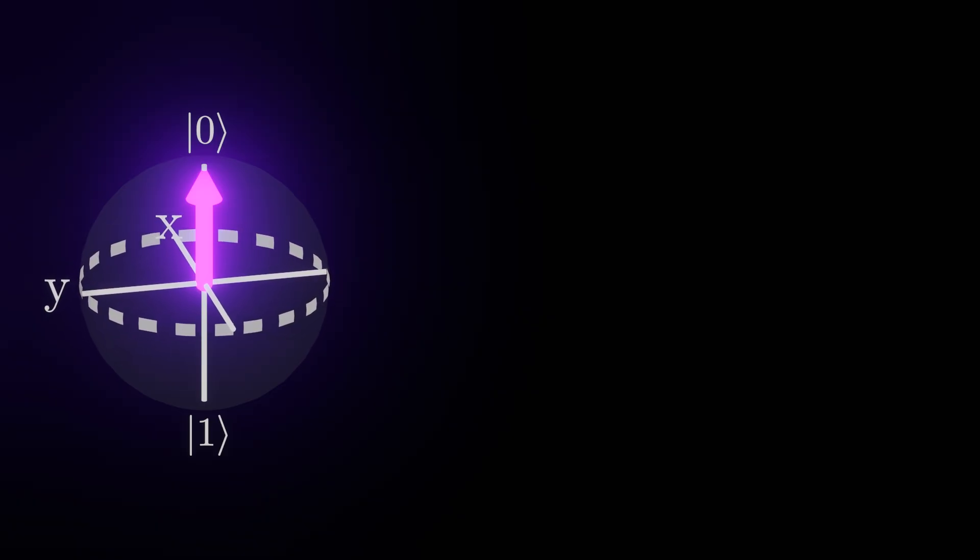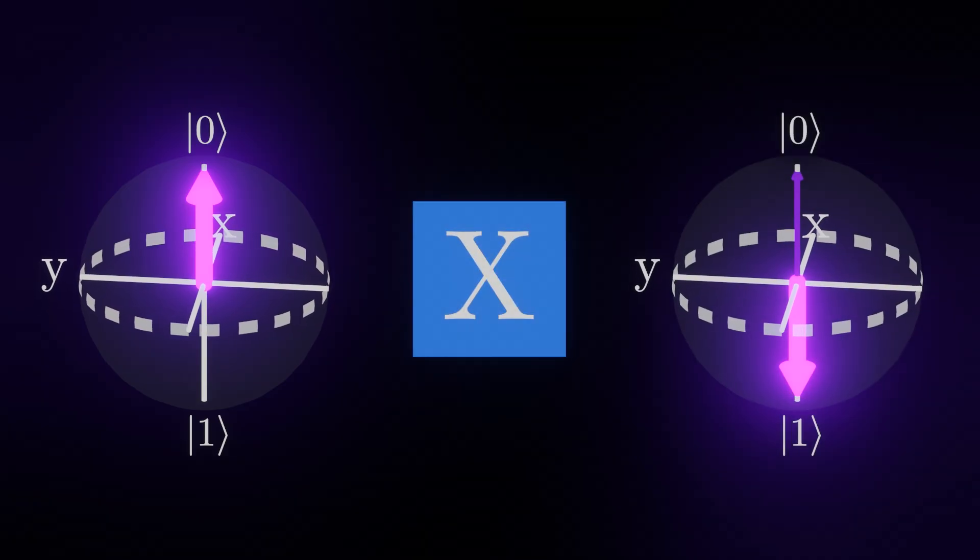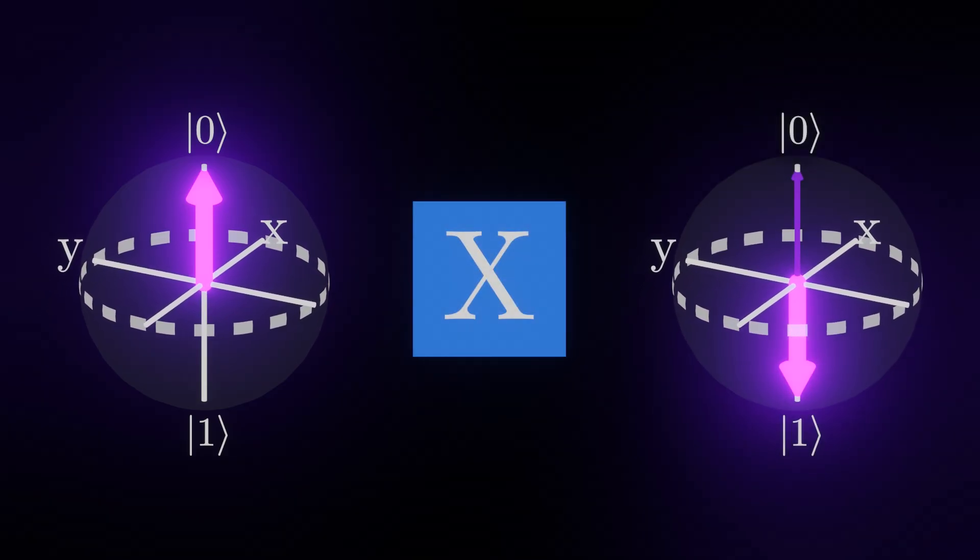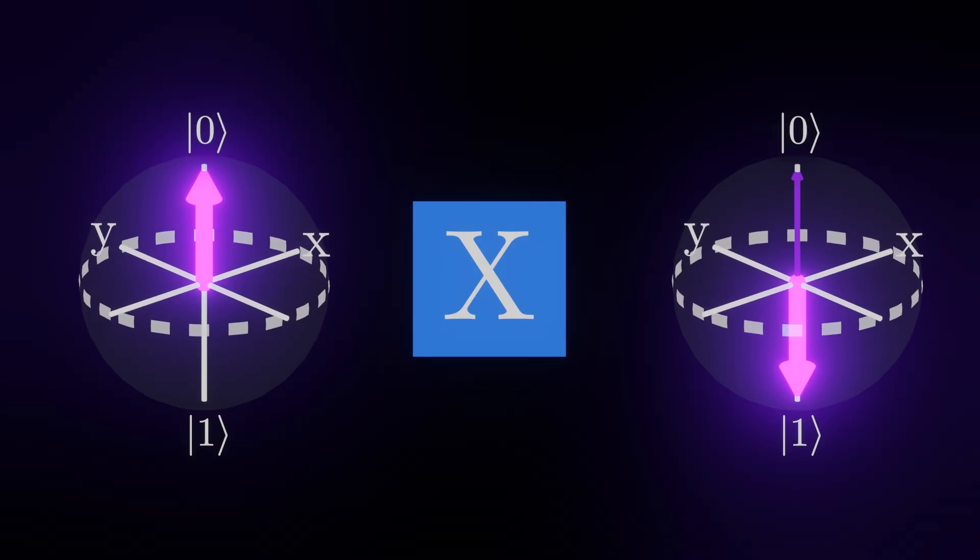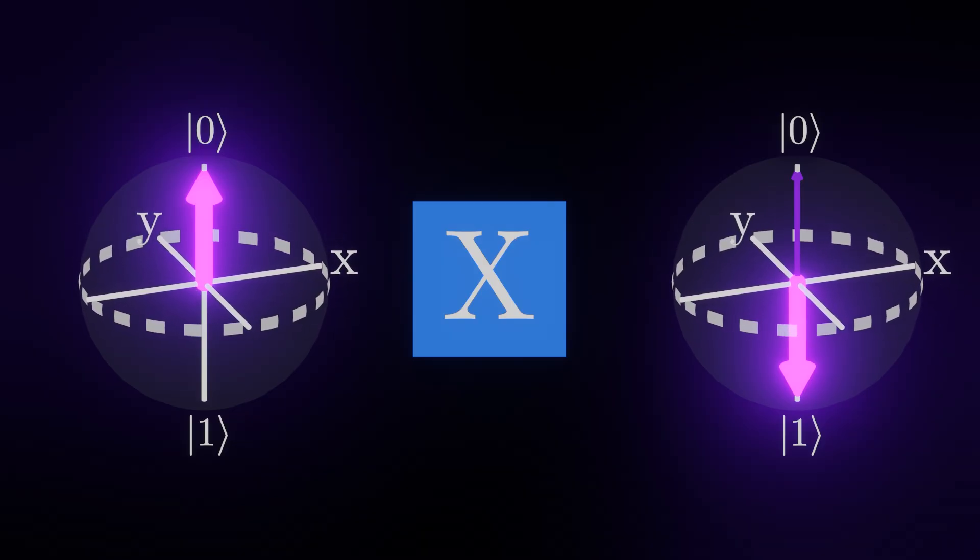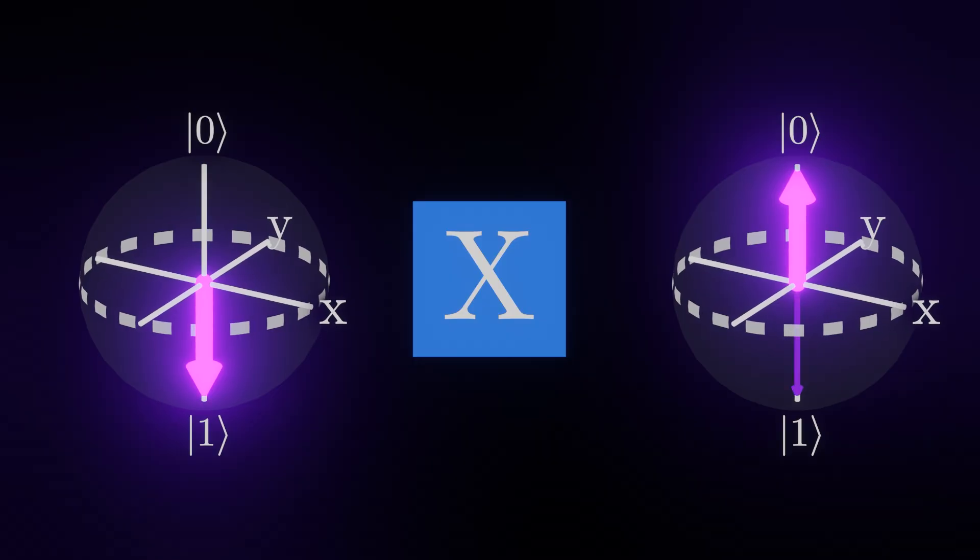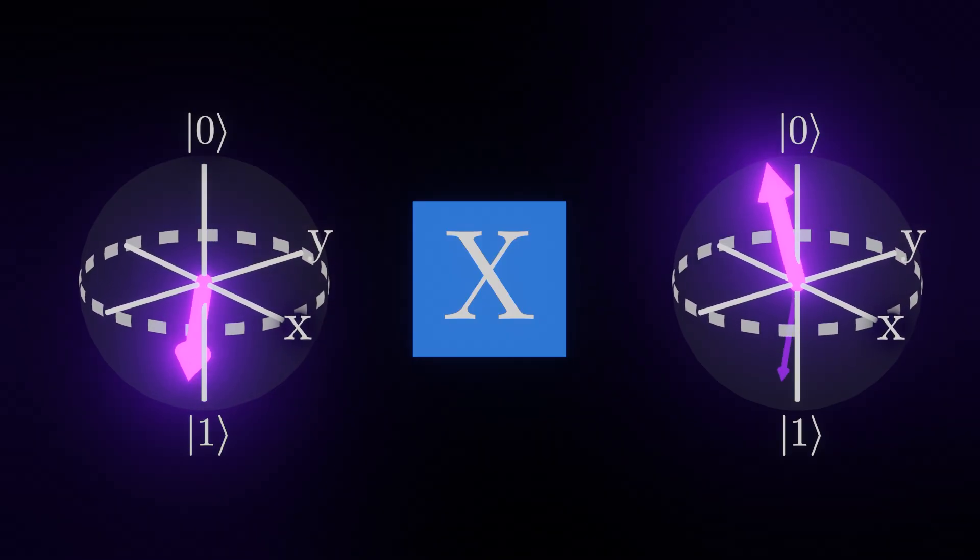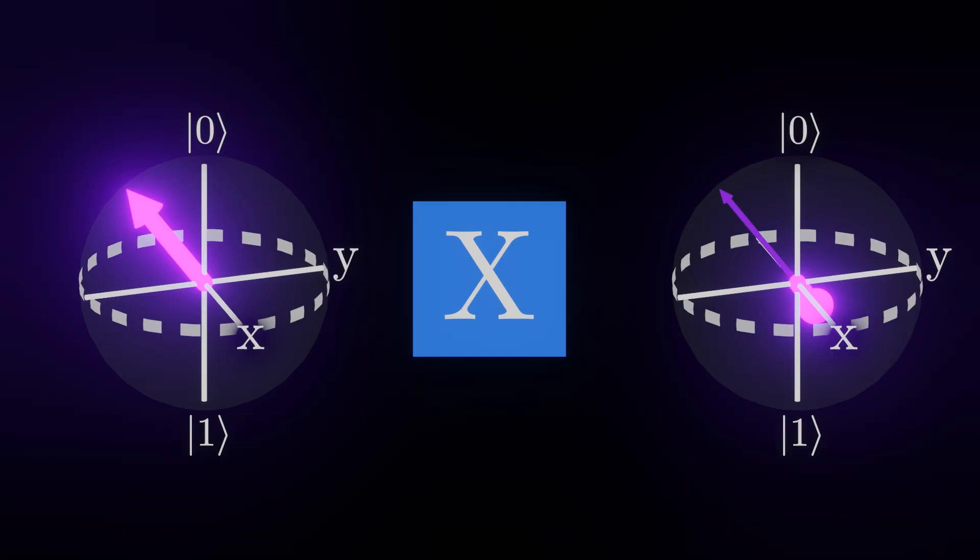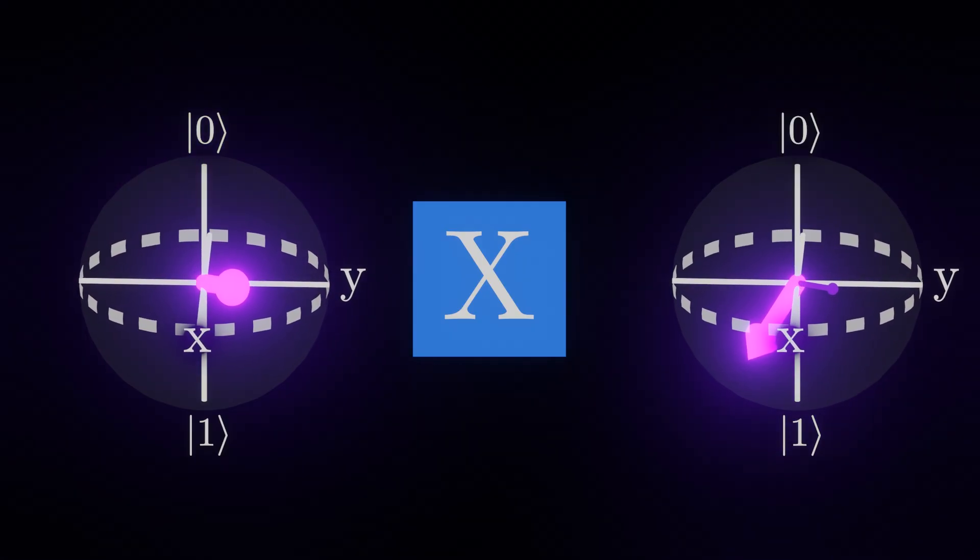From this labeling, we can see where the X gate gets its name. Specifically, its function can be described as a half rotation around the X axis. Notice how this flips a 0 qubit to 1, and vice versa. This also tells us what happens in cases where the qubit is not exactly 0 or 1.